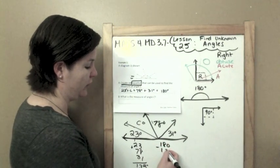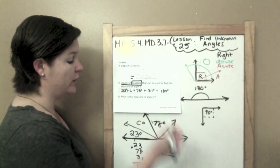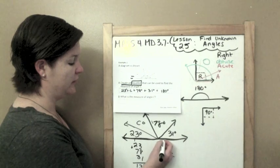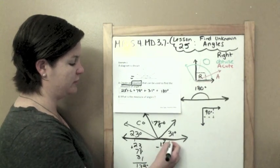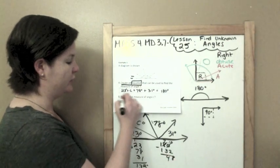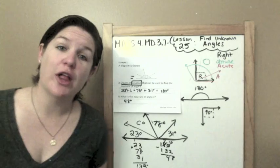So let me subtract what I know, which is 132, to figure out what I don't know. 0 minus 2, you can't do that, so you need to regroup. That becomes a 7. This becomes a 10. 10 minus 2 is 8. 7 minus 3 is 4. So 48 degrees would be the measure of angle C.